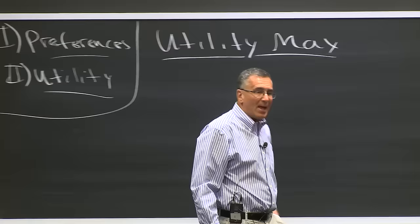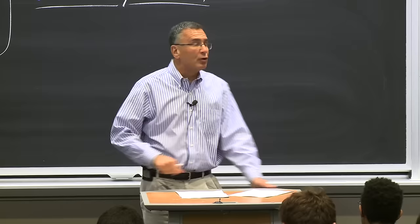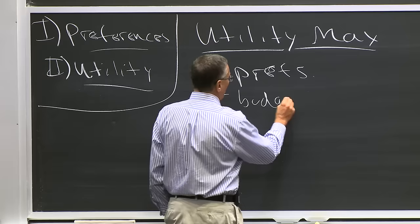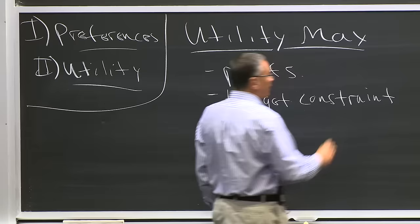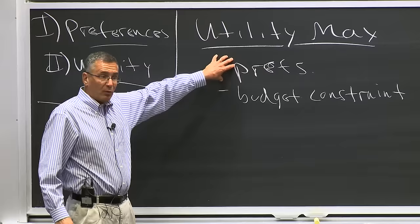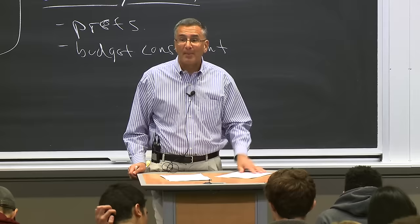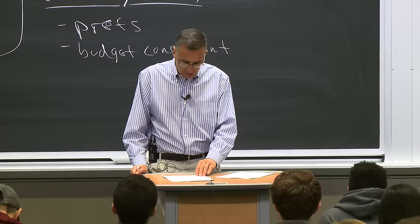Our model of consumer decision making is going to be a model of utility maximization. Remember, this course is all about constrained maximization. This model will have two components: consumer preferences, which is what people want, and a budget constraint, which is what they can afford. We're going to put these two things together — maximize people's happiness given their preferences subject to the budget constraint — and through the magic of economics, that will yield a very sensible demand curve.